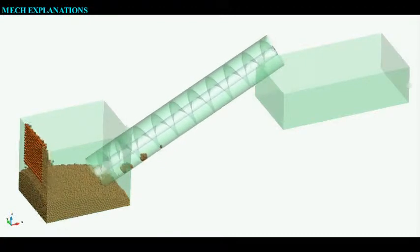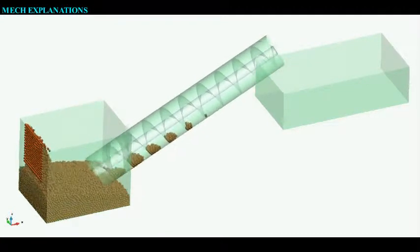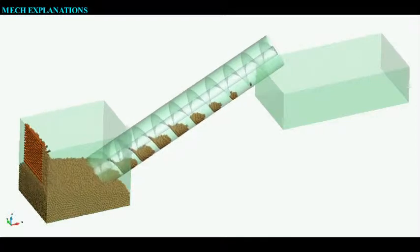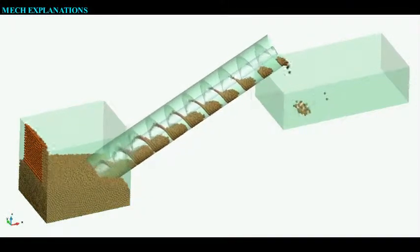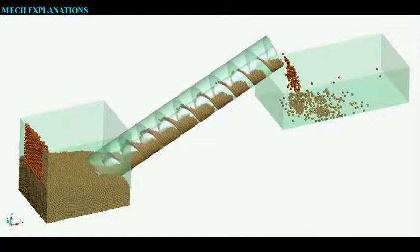As the shaft turns, the bottom end scoops up a volume of water. This water is then pushed up the tube by the rotating helicoid until it pours out from the top of the tube.